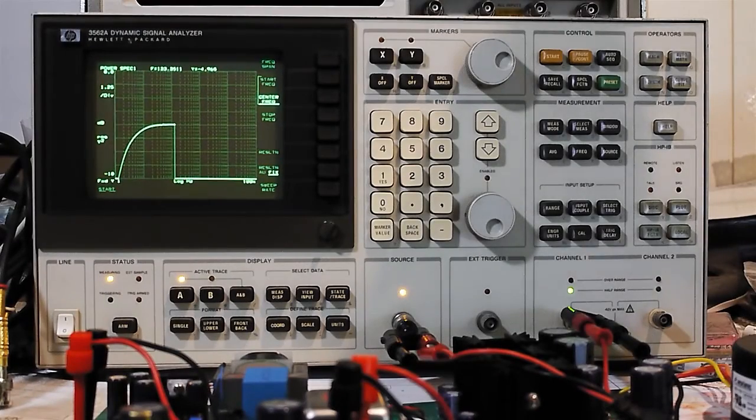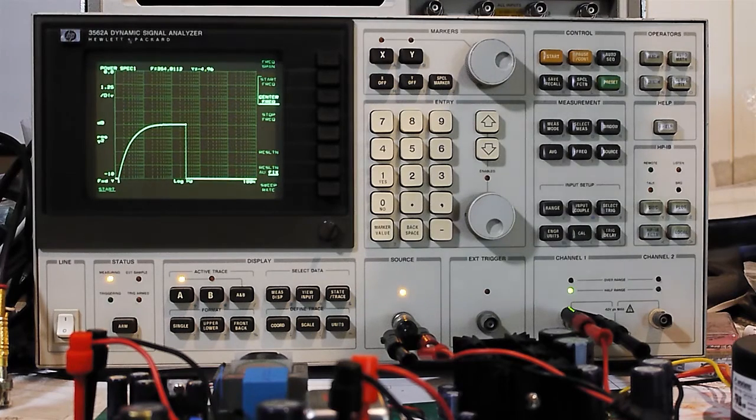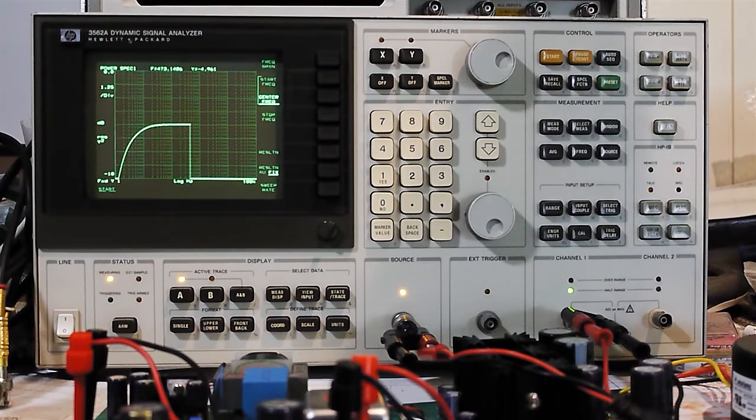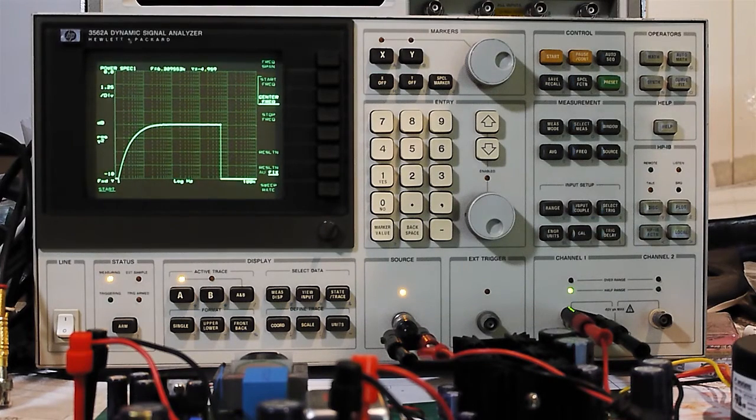We're sweeping from 10 hertz to 100 kilohertz and we have the source set to an output of 100 millivolts RMS. We've disengaged the input pad and we have the preamp gain set to minimum. We're just watching the trace unfold here. So I have yet to see the high frequency response of this preamp, so this should be quite interesting.